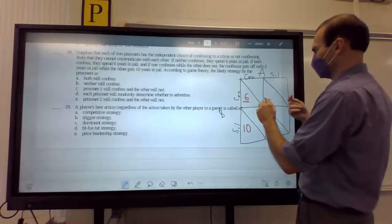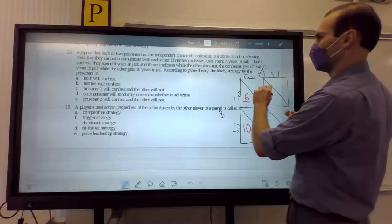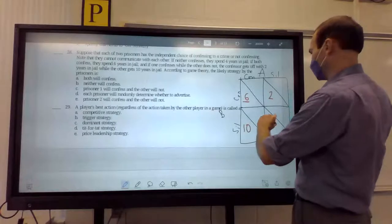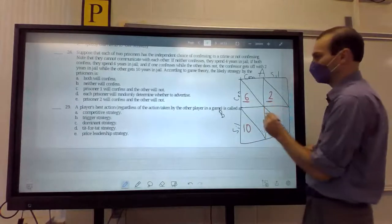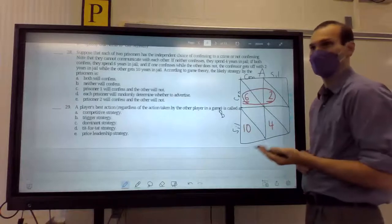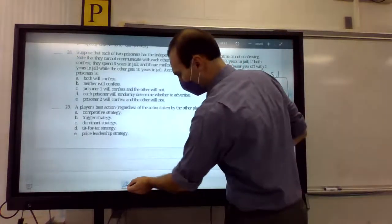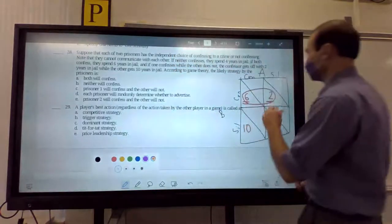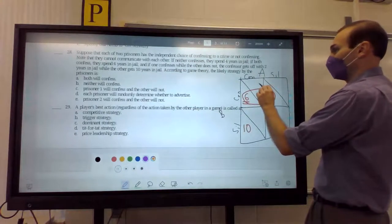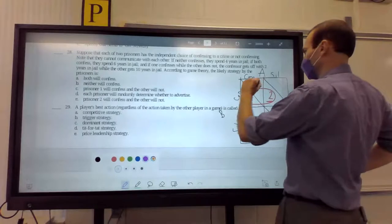Two years. Wait. Wait. So, if they both confess. Oh, that would be, what did they say? Two years. Two years. And if they both remain silent, it's four years. So, does B have a dominant strategy? Yes. All right. Let's go ahead to the next one. A's strategy. So, if B confesses and A confesses, that will be six. But if B confesses and A remains silent, that will be ten.